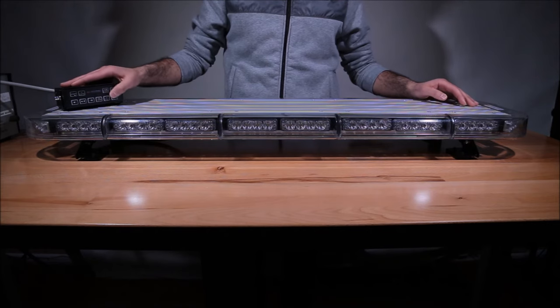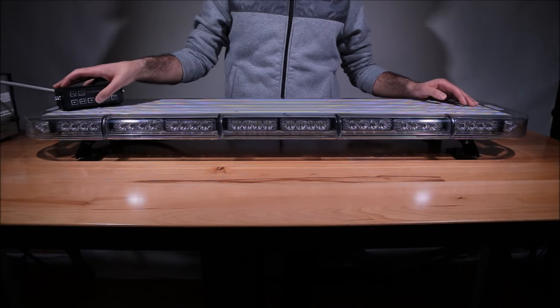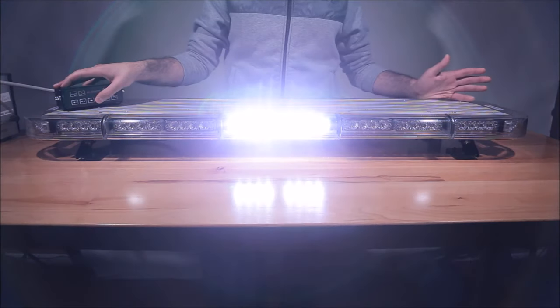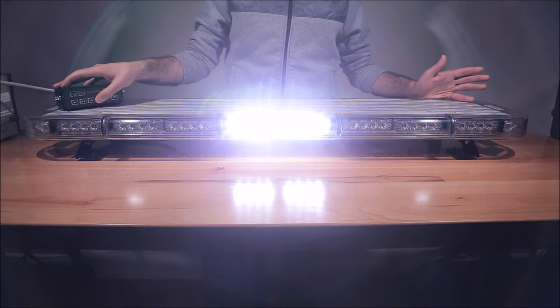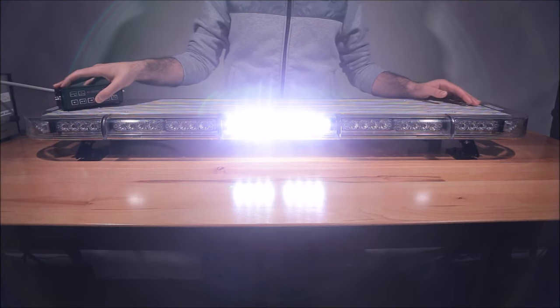The dual color alleys and takedowns are also enabled when the light bar is off. As you can see the light bar is currently off. You could activate dual color takedowns with just a flick of a button.